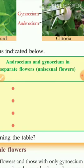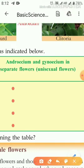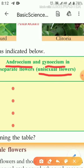Now another conclusion: in some flowers, androecium and gynoecium are in separate flowers. These are known as unisexual flowers. So a unisexual flower has androecium and gynoecium in separate flowers. Now let's find different examples of unisexual flowers.